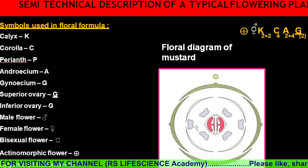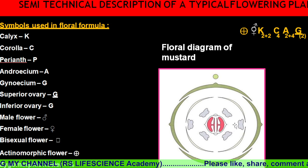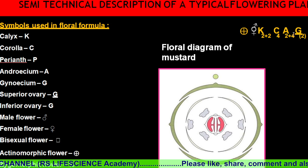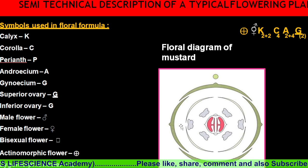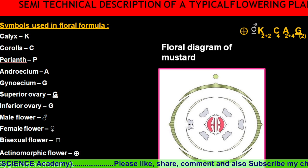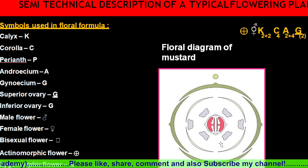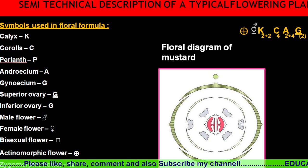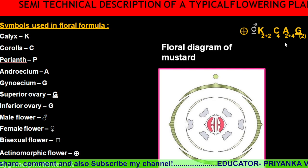How many androsium are there? One, two, three, four, five, six — that is two plus four. Two are on the sides and four are in the center, slightly further. So the androsium count is two plus four.